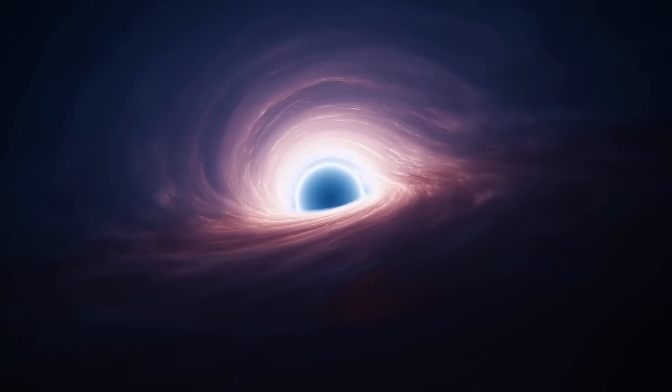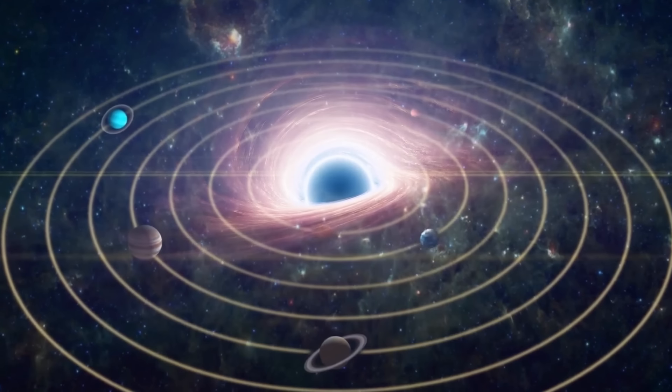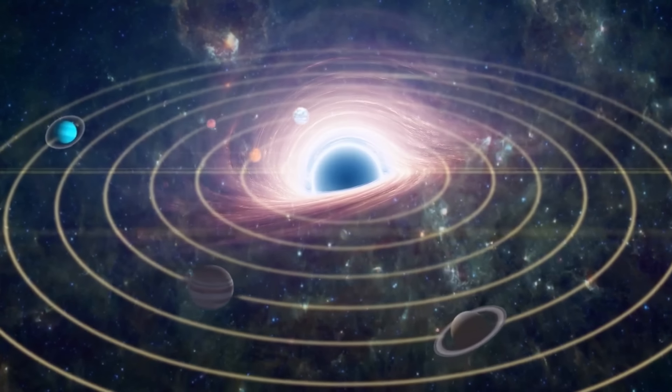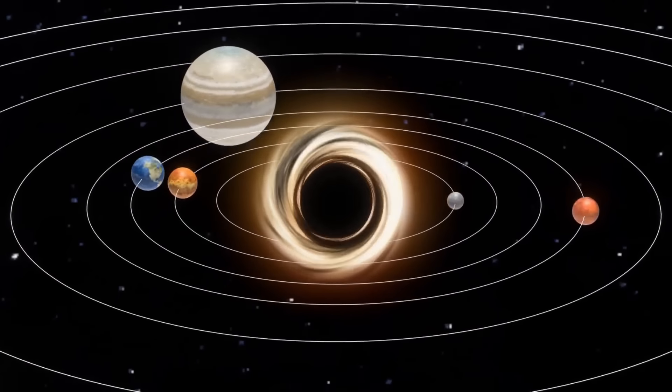Even if our sun was somehow replaced with a black hole as massive as itself, nothing would change for Earth or any other planet in the solar system. Gravitationally speaking, of course.